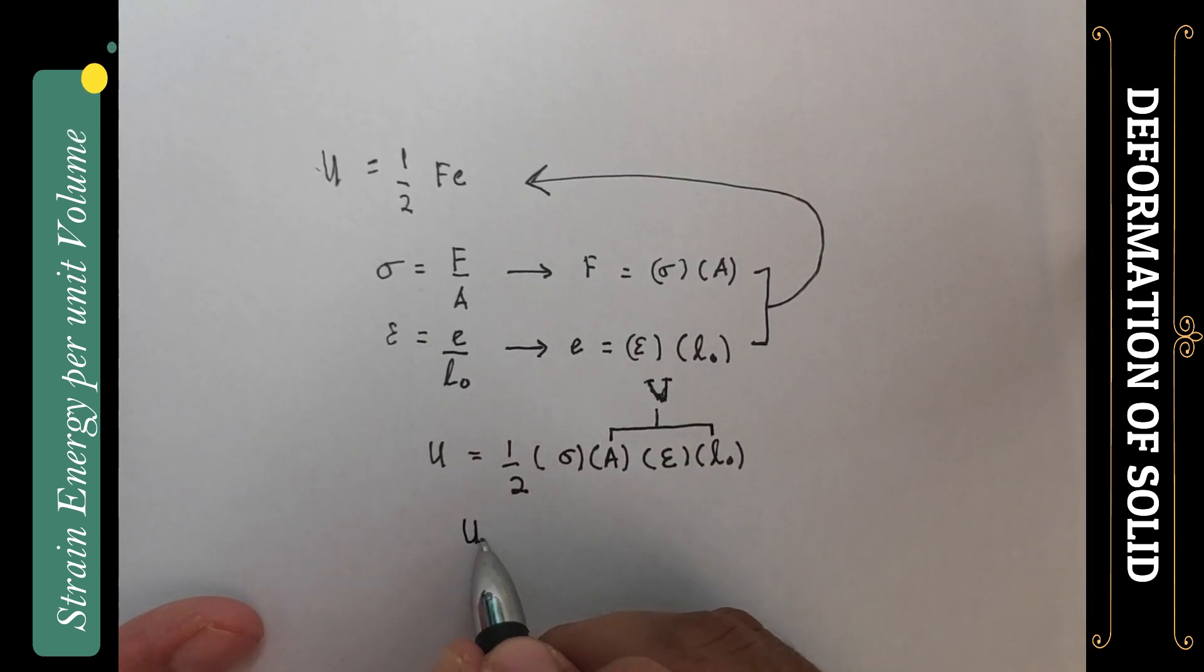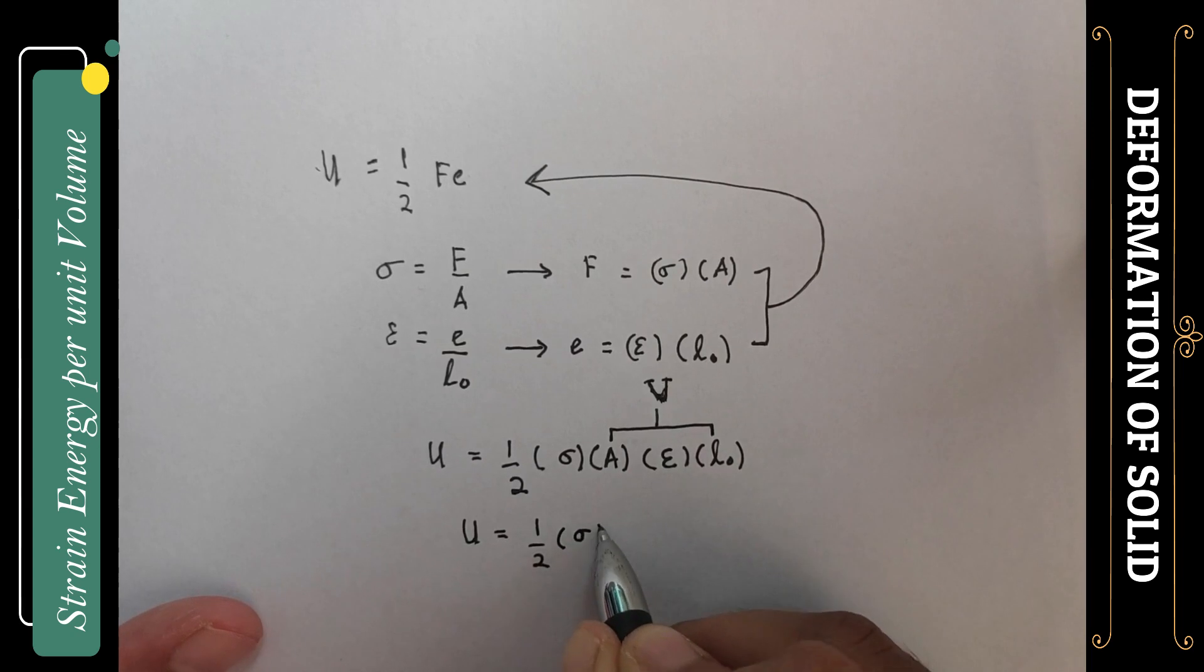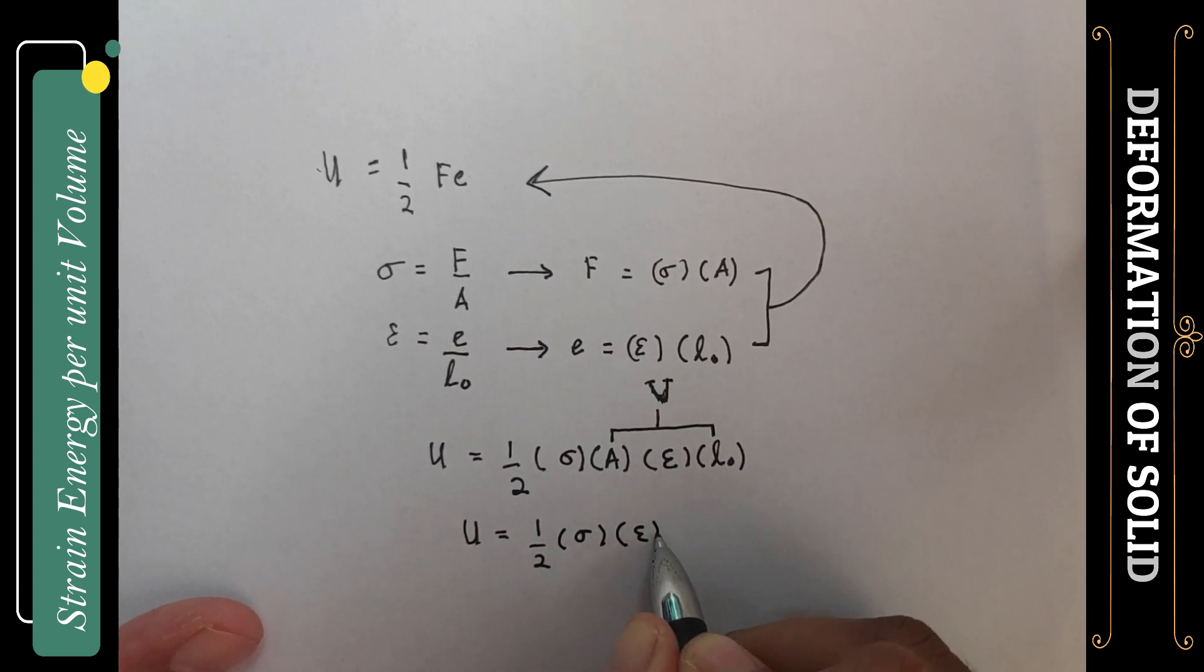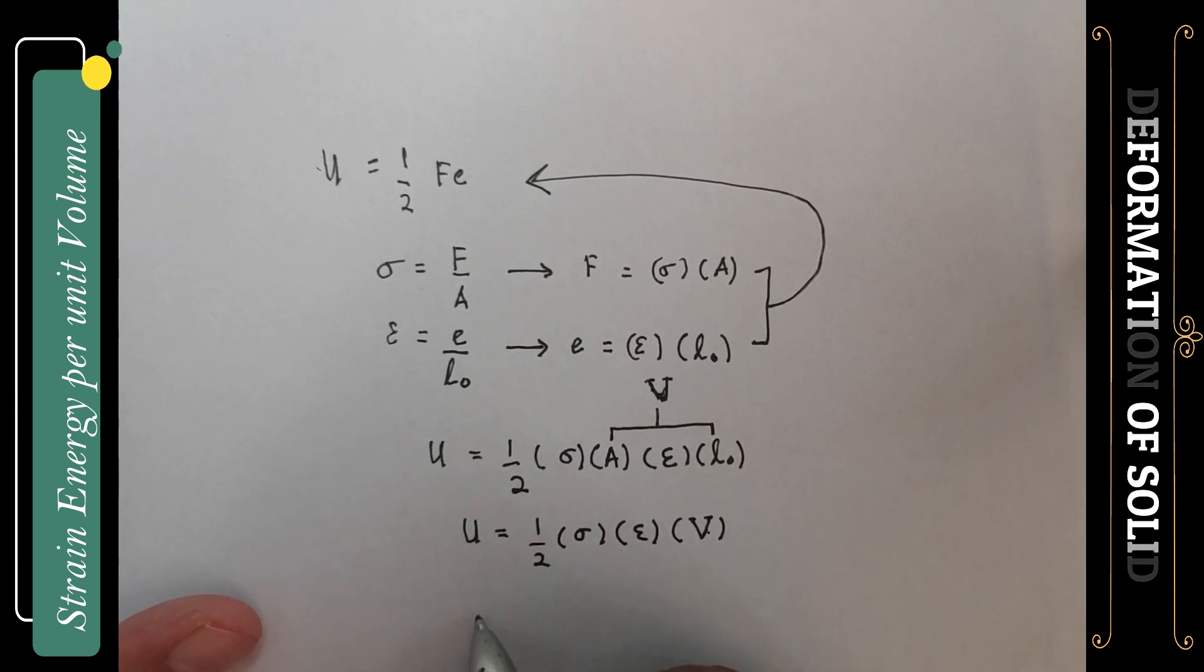Substituting, we can write U equals half stress times strain times volume. If I divide this equation by volume, I will get U over V equals half stress strain.